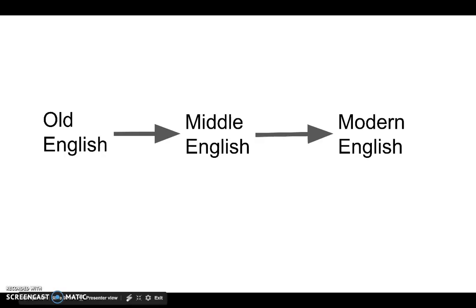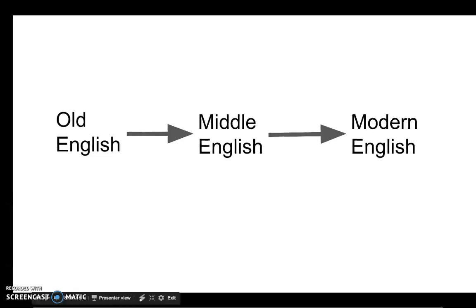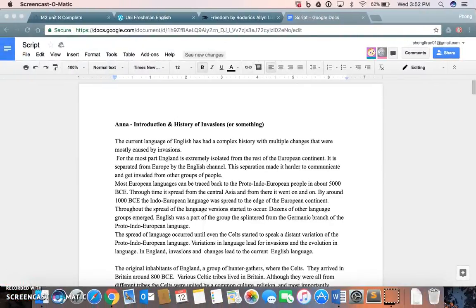English as a language was vastly different from the English we know and use today. This happened because of multiple factors — from invasions by outsiders with different languages, to taking written characters from Greek, Latin, and other older sources. Old English had a different grammar structure, different dialects, and even used different characters. Looking back into the history of our language and comparing it to modern English paints a vivid picture of how our language, like many others, has evolved.